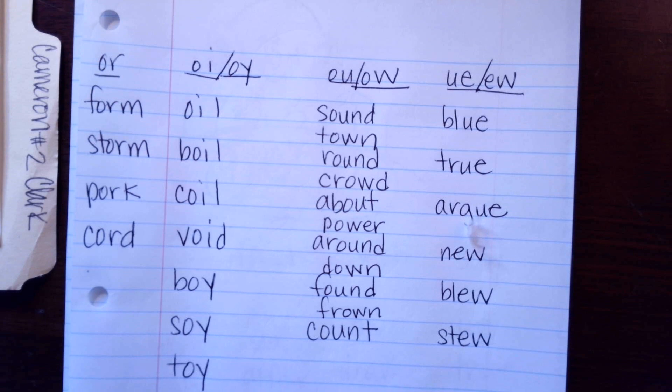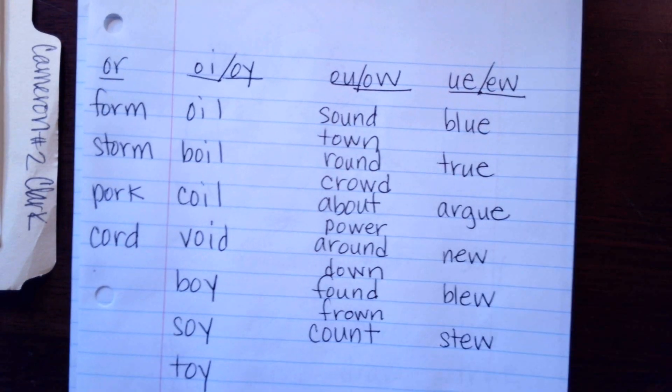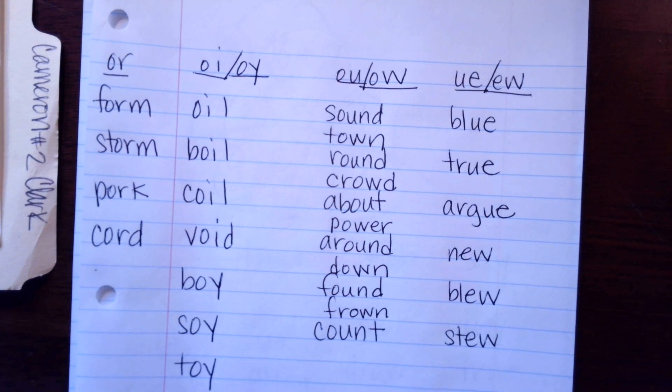The next one is UE and EW — both make the same sound. It makes OOO. Mom's going to pause the video and do all of those.